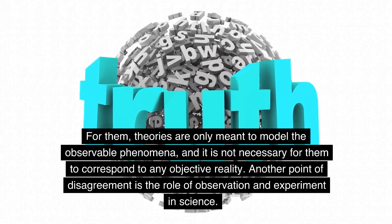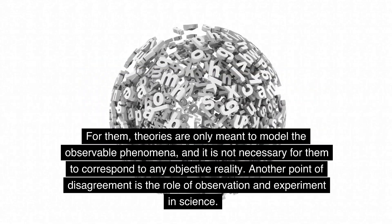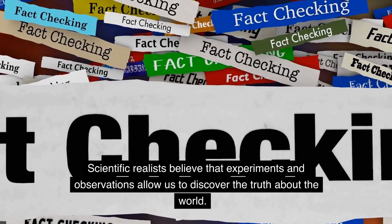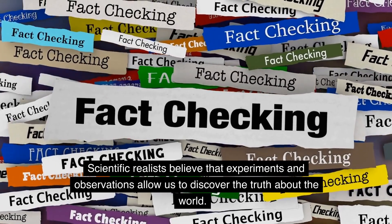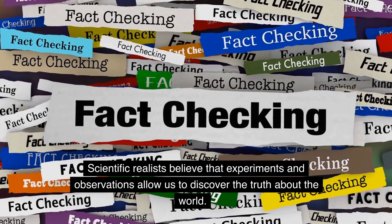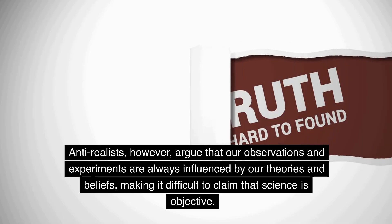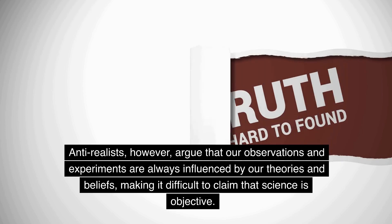Another point of disagreement is the role of observation and experiment in science. Scientific realists believe that experiments and observations allow us to discover the truth about the world. Anti-realists, however, argue that our observations and experiments are always influenced by our theories and beliefs, making it difficult to claim that science is objective.